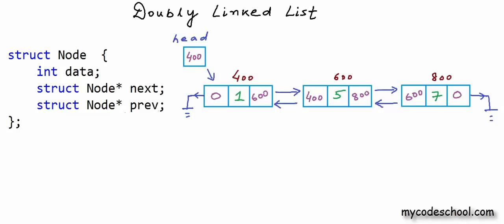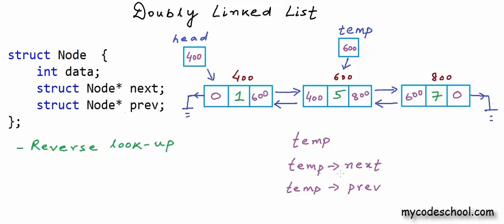If you have ever implemented a singly linked list, it should not be very difficult to implement a doubly linked list. One obvious question is: why would we ever want to create a doubly linked list? What are the advantages or use cases? The first advantage is that if we have a pointer to any node, we can do a forward as well as reverse lookup. With just one pointer, we can look at the current node, the next node, as well as the previous node. I am showing a pointer named temp here. If temp points to a node, then temp->next is the address of the next node, and temp->prev is the pointer to the previous node.